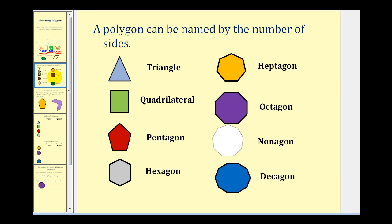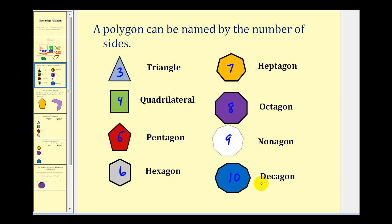There are specific names for polygons based upon the number of sides. Three sides: triangle. Four sides: quadrilateral. Five sides: pentagon. Six sides: hexagon. Seven sides: heptagon. Eight sides: octagon. Nine sides: nonagon. Ten sides: decagon. There are more names, but all of these are special names within the bigger group of polygons — each named by the number of sides it contains.